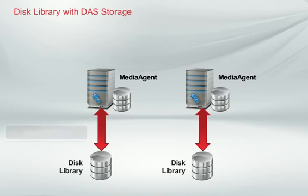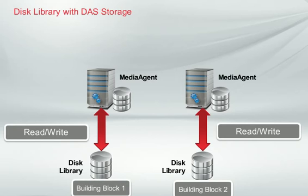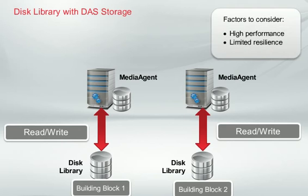The first method for configuring disk library paths is Direct Attached Storage, or DAS. This means the disk library is physically attached to the media agent, and each building block will be completely self-contained. Because it provides high performance, DAS could be the right method for you. However, it has no resilience, providing a single point of failure.